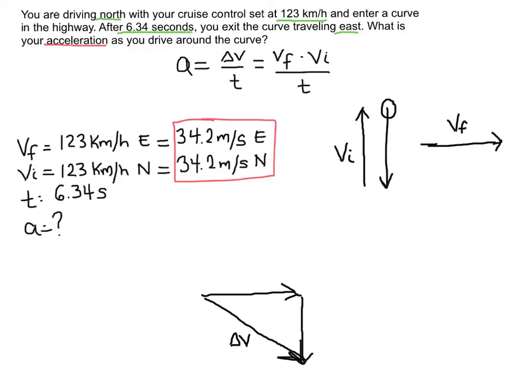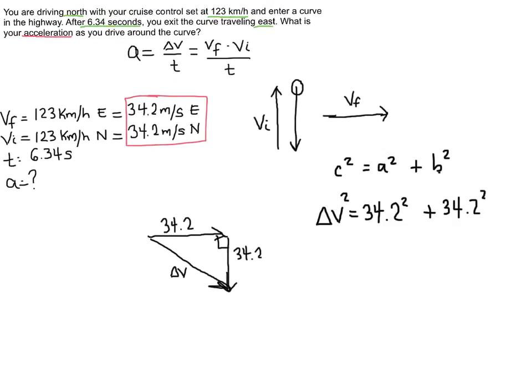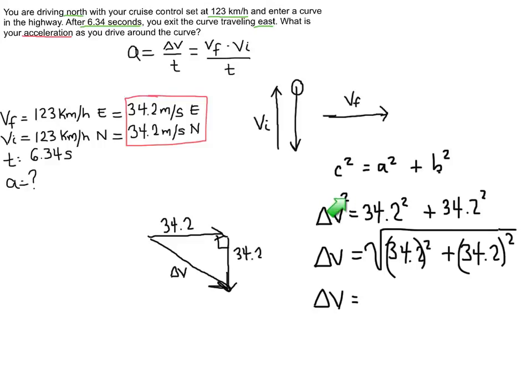So what I'm going to do is I'm going to solve for the magnitude of this side of the triangle here, in other words this hypotenuse, because I made a right angle triangle. Now I know each side is going to be 34.2 meters per second and so I could just use the Pythagorean theorem to solve for that unknown side. Here's the Pythagorean theorem that we know: c squared equals a squared plus b squared. I've just subbed in the variables that we're working with and I'll solve for delta v the hypotenuse. I'll end up with 34.2 squared plus 34.2 squared and then I'll take the square root of that because I needed to get rid of that squared right there. We end up with 48.4 meters per second.